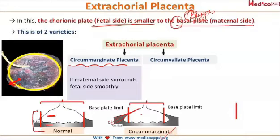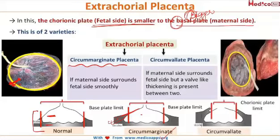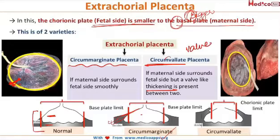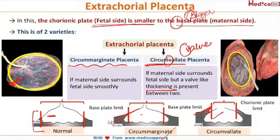If this transition is not smooth and there is a fold of fetal membranes forming a valve-like thickening all around the fetal side, it is called circumvallate placenta. In circumvallate placenta, the maternal side surrounds the fetal side with a fold of membranes forming that valve-like thickening, and the fetal side is slightly depressed compared to the maternal side.